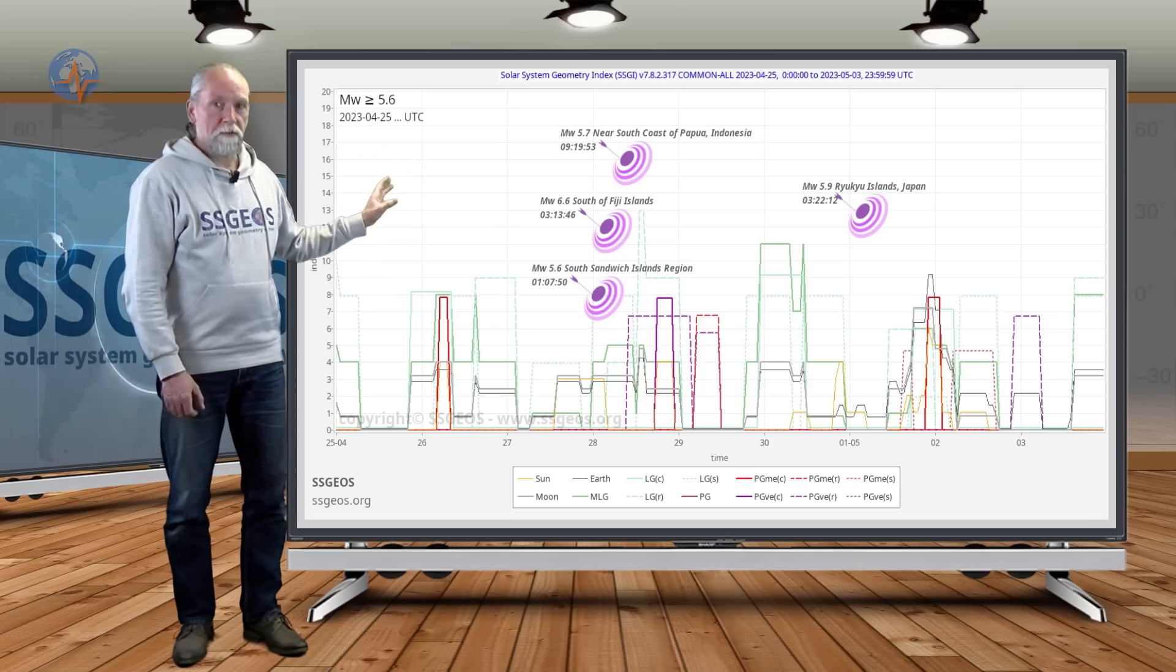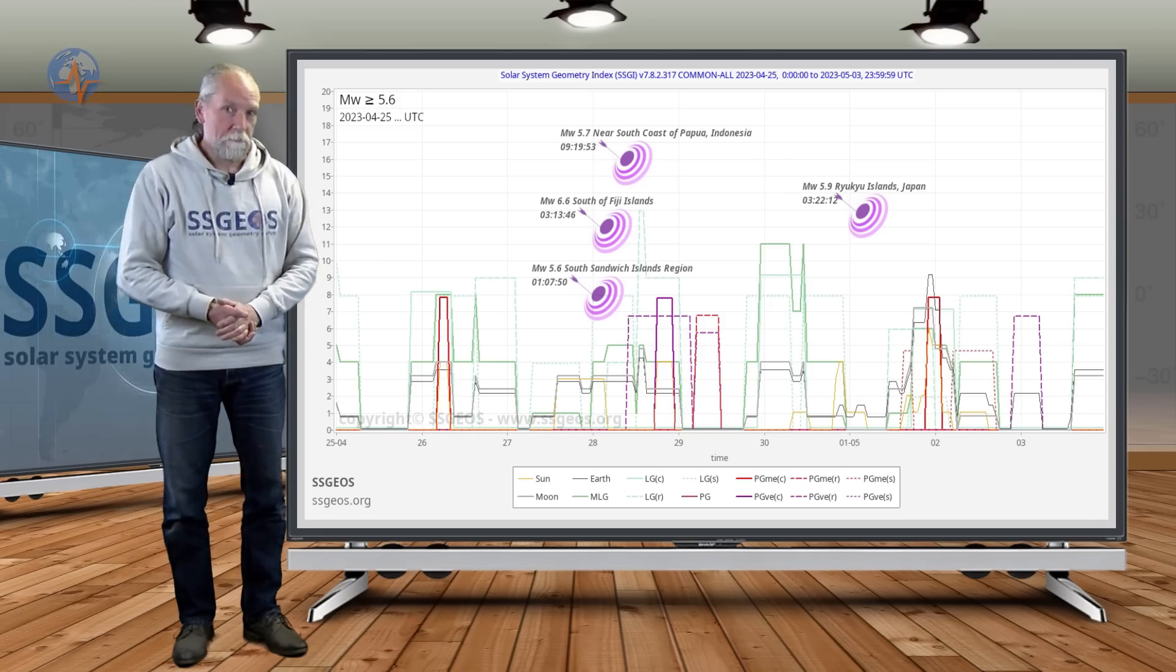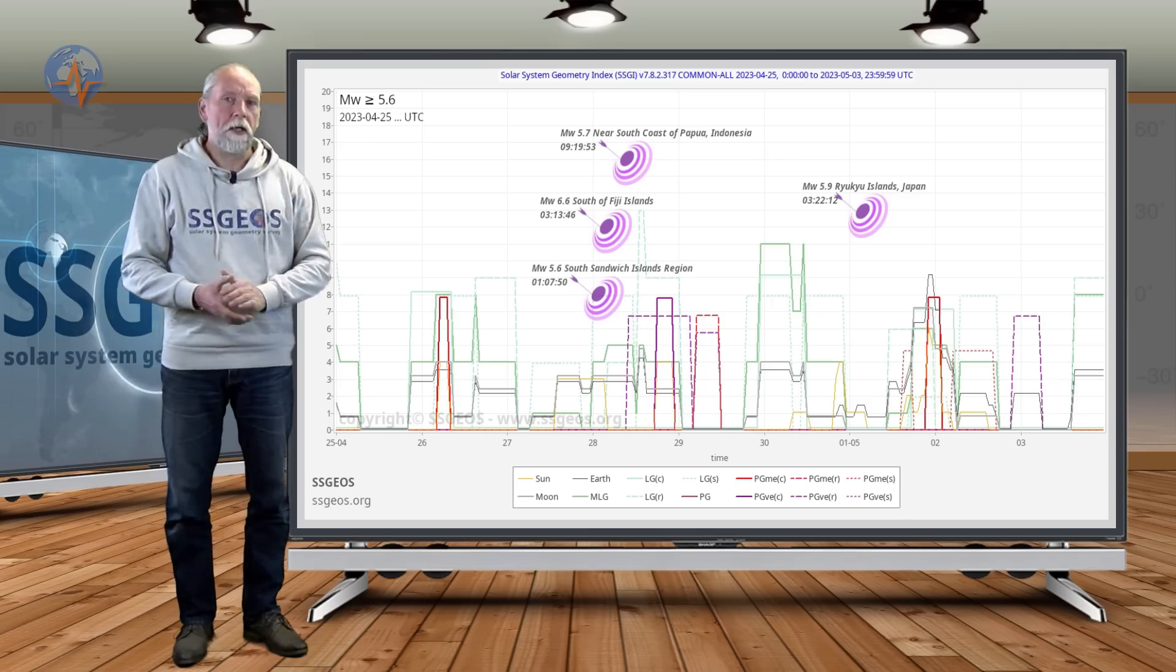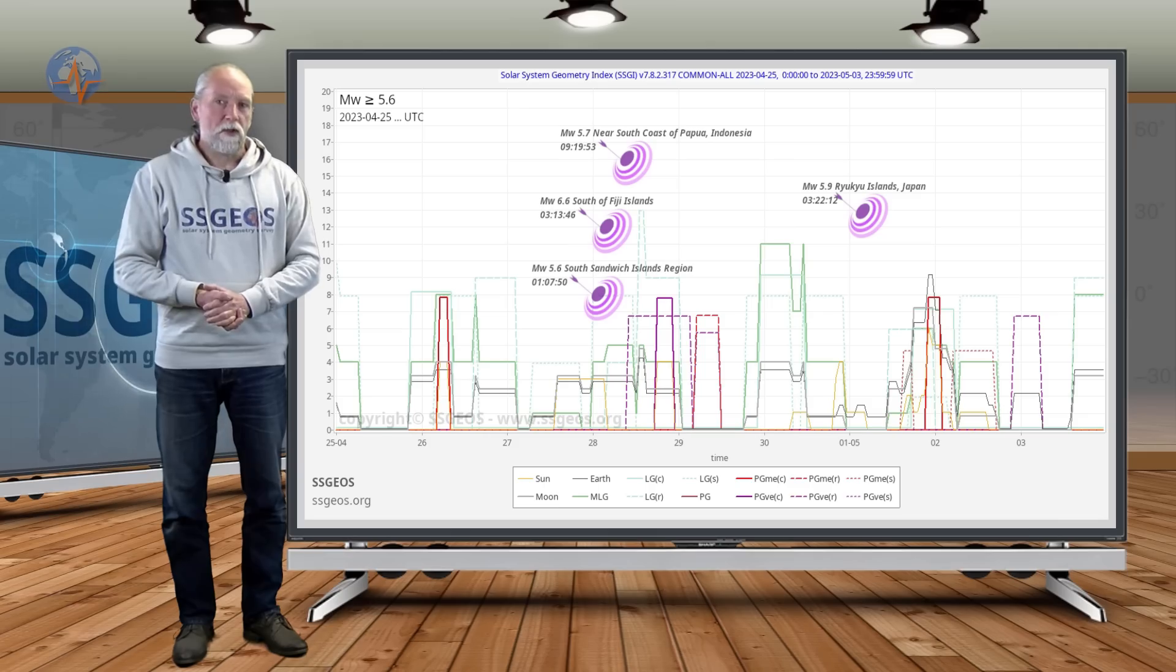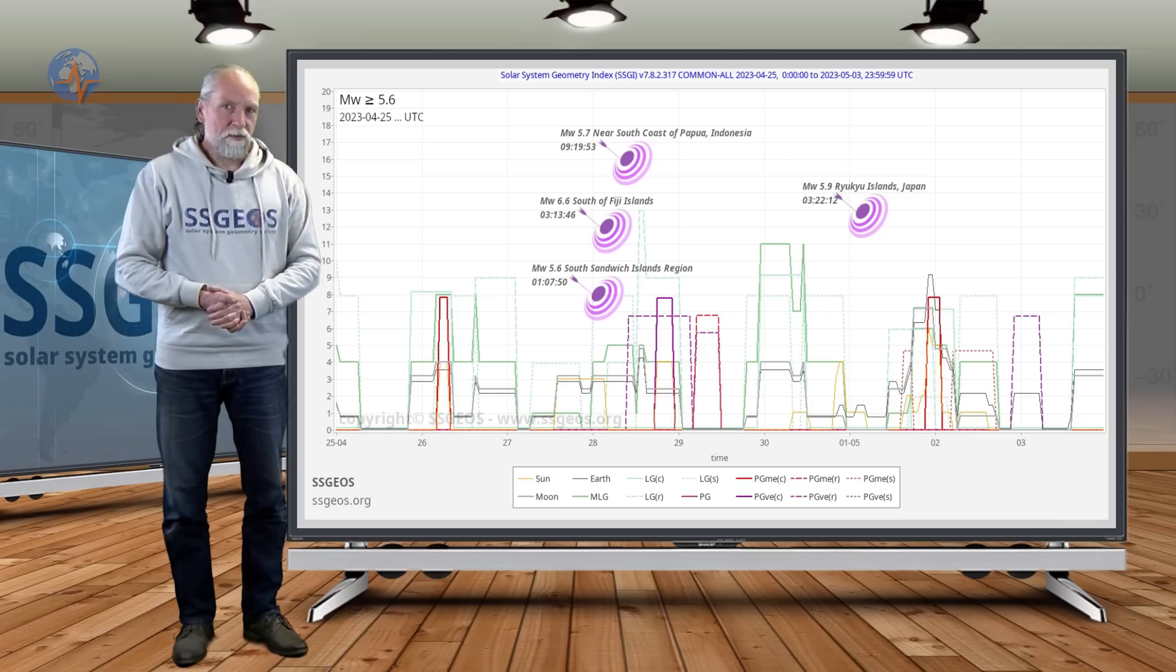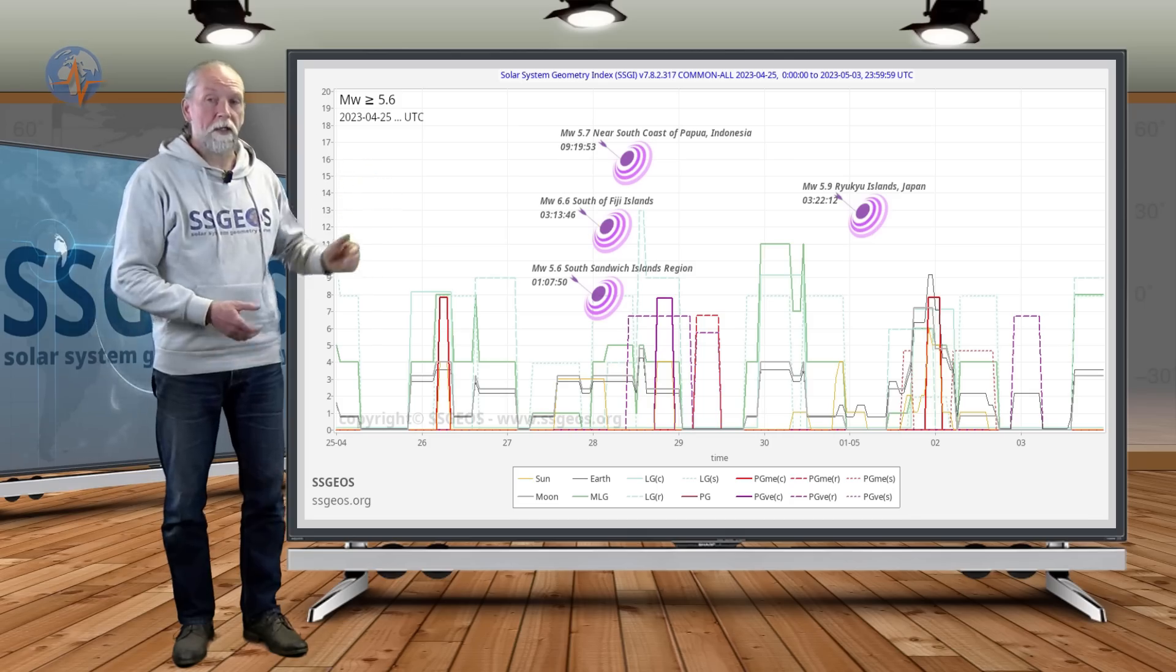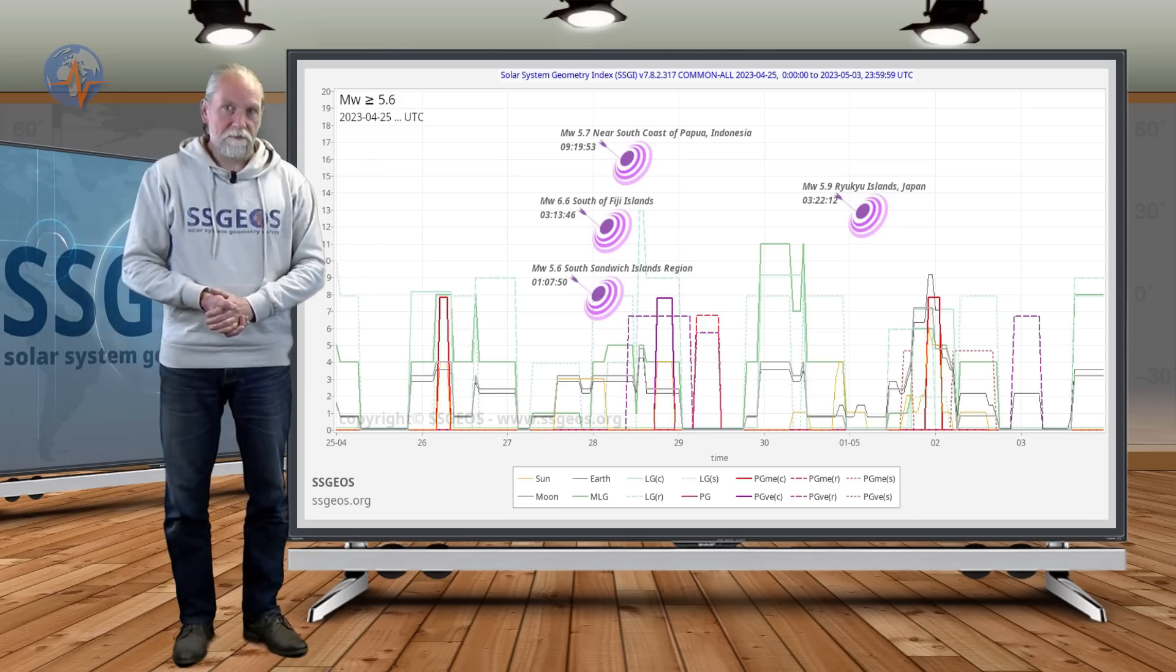That was all the largest seismic activity, magnitude 5.6 and larger, in this time frame. So as you can see, we can have a convergence of critical planetary geometry, and it's always the question how Earth is going to respond. At this time we didn't have a higher 6—well, we had a 6 on the 28th—but other than that we didn't have larger seismic activity.